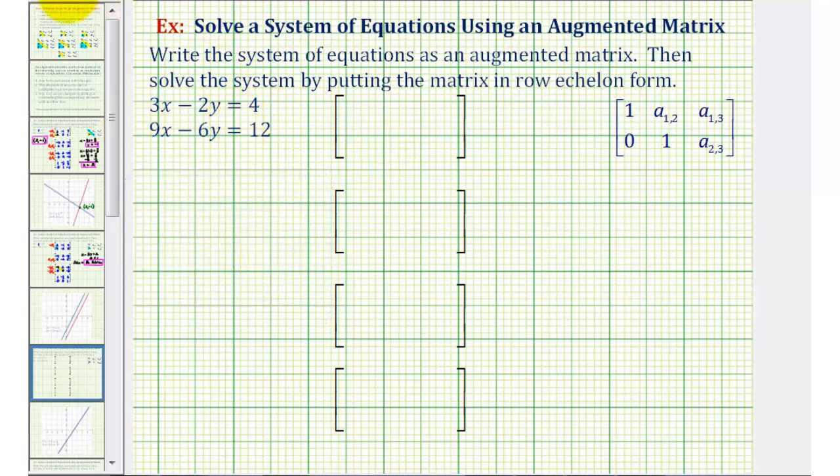Using the first equation, the first row in the two by three augmented matrix will be 3, -2, 4. The second row will be 9, -6, 12.